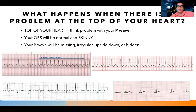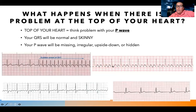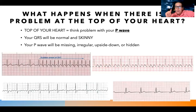One of the things I brought up in that first PowerPoint is you want to look at: is everything that's supposed to be there present, and is it how it's supposed to be? If I'm having an atrial problem, there's going to be something off with my P wave, but my QRS will be normal and skinny - narrow. That's how the QRS is supposed to be; it's not supposed to take a long time for the bottom of the heart to contract. With an atrial problem, the P wave may be missing, irregular, upside down, or hidden.